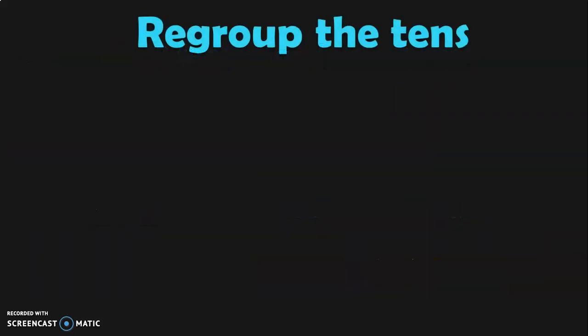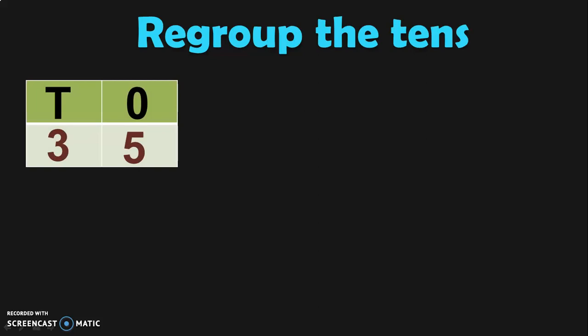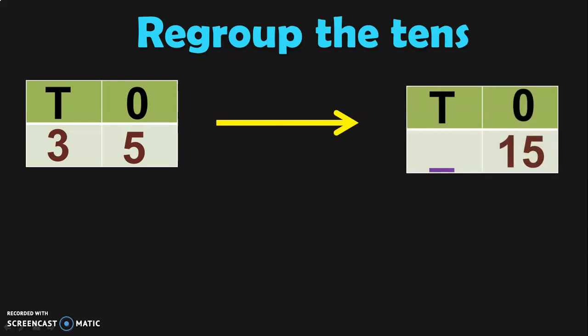Let us do some more examples to get this concept really clear. Regroup the tens. Here we have three tens and five ones. Let us regroup this. I have given a dash in the tens place and fifteen in the ones place. What will you get in the dash? When you regroup the three tens, you get two tens and fifteen ones.